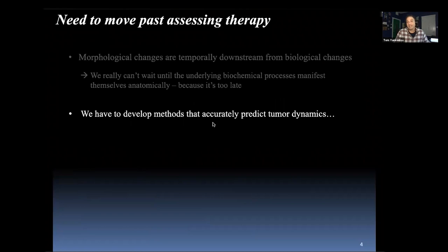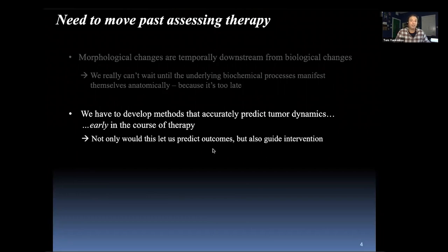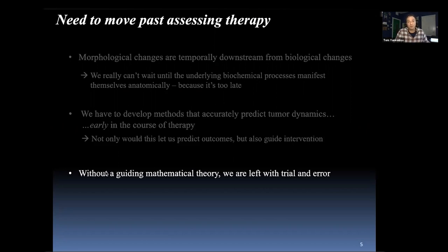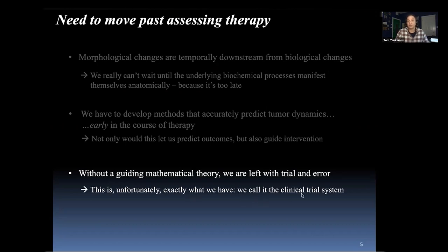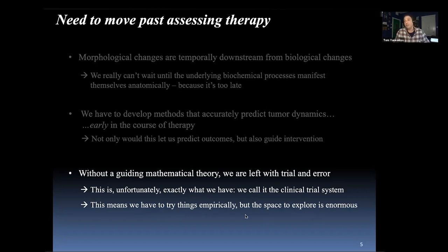We have to develop methods that can accurately predict tumor dynamics early in the course of therapy. Not only would this let us predict outcomes, but it would also let us guide interventions early enough to try alternative ones. Without a guiding mathematical theory, we're left with trial and error — which is essentially what the clinical trial system is. The space to explore is enormous, with way too many variables and too much heterogeneity across patients to explore every part of the parameter space empirically.